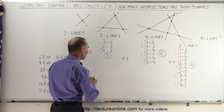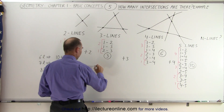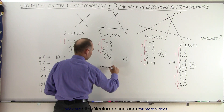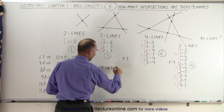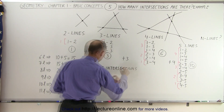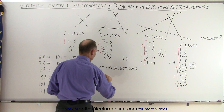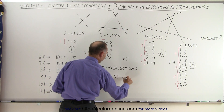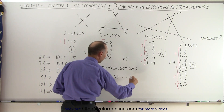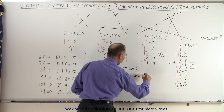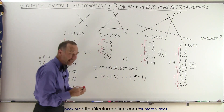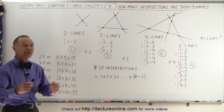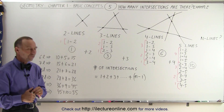So essentially the number of intersections when we have n lines is equal to 1 plus 2 plus 3 plus ... all the way to n minus 1. And it doesn't matter what n is — that will always give you the correct number of intersections.